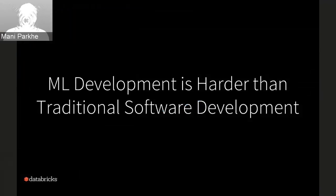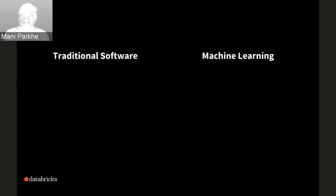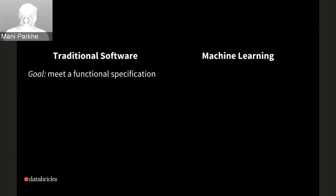I'm sure this team appreciates how complex ML development is and also appreciates that it's slightly harder than traditional software development as we have done in the last few decades. To tease this out a little bit, I want to talk about some differences between traditional software development and machine learning development. Let's start with problems in each.